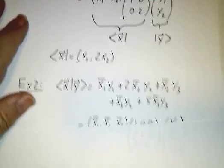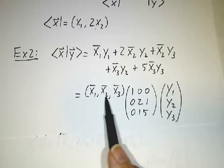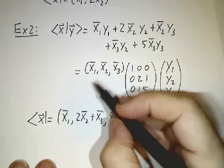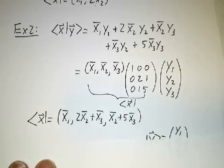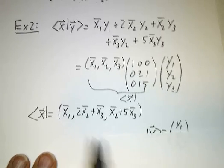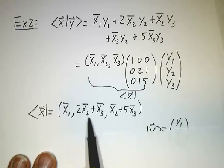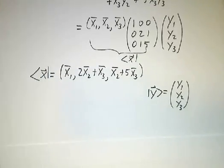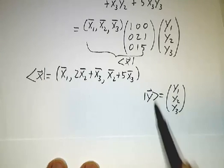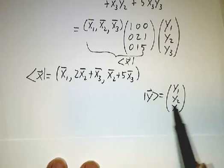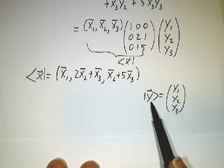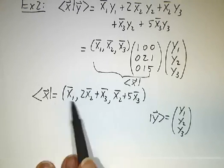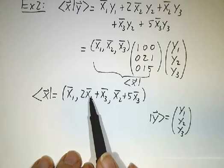In the second example, we take the row, which is x1 bar, x2 bar, x3 bar, times the matrix, times a column. And all of this together is what we call the bra for x. So the bra for x, if you multiply it out, is x1 bar, 2x2 bar plus x3 bar, x2 bar plus 5x3 bar. And of course, the ket y is the vector y. The ket doesn't care what the inner product is because the ket is the vector. The bra does care what the inner product is because the bra is take the inner product of x with something. That depends on what x is and it depends on what the inner product is.